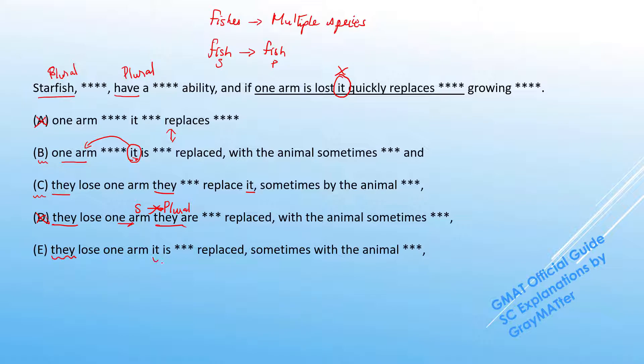And if they lose one arm, it is replaced. So the they is referring to the starfish and the it is referring to the arm. So this is also proper matching number. We can hold on to that. So A and D are out of the way. Let's look at the differences with the remaining choices.